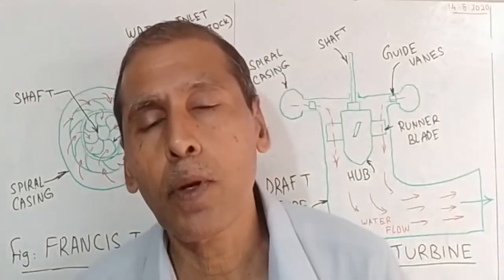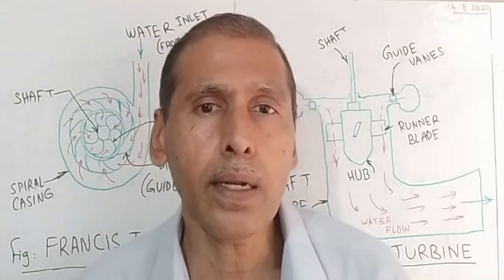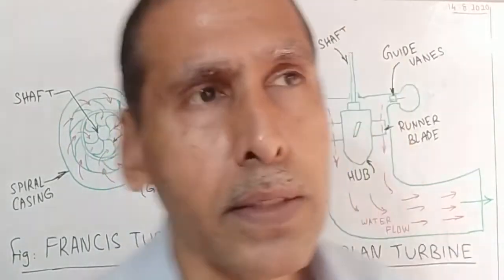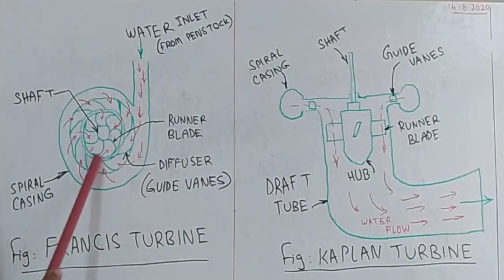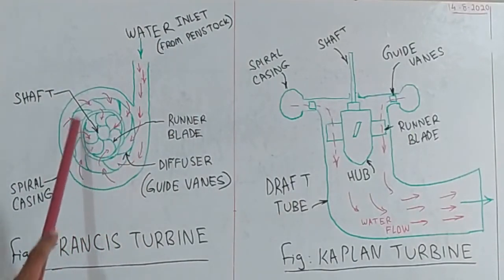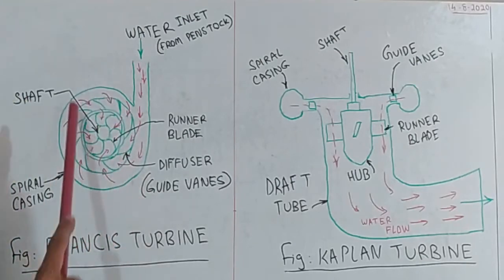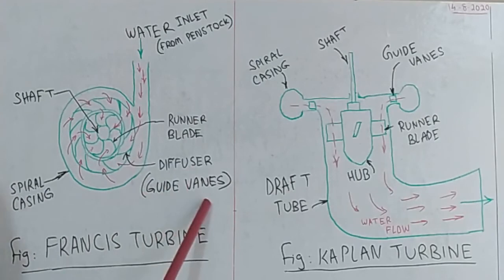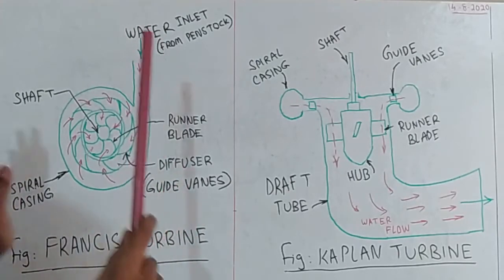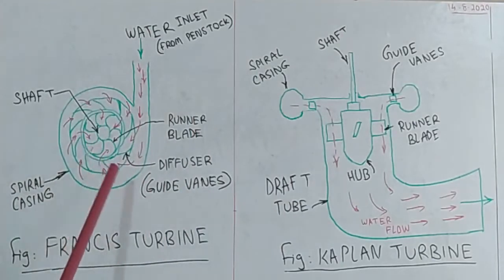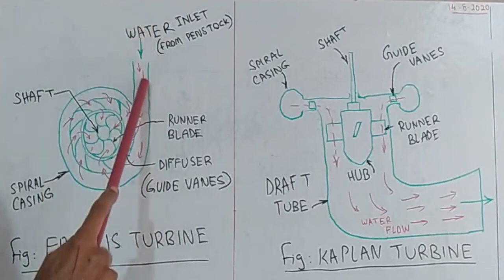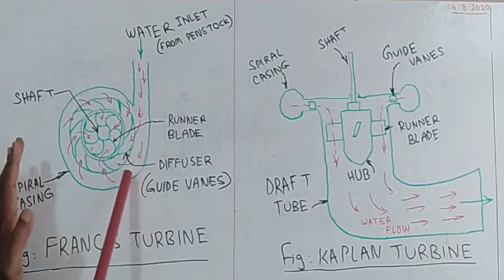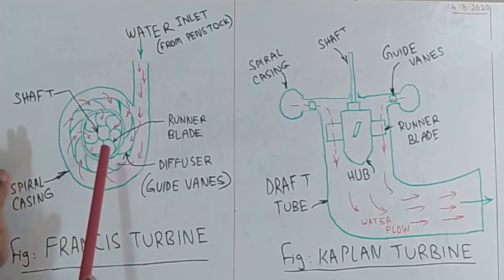For low head conditions, the Kaplan turbine is used. The main components include the pressure valve and penstock, the water inlet, the diffuser, and the gateway. The gateway acts as a gate to ensure smooth flow.